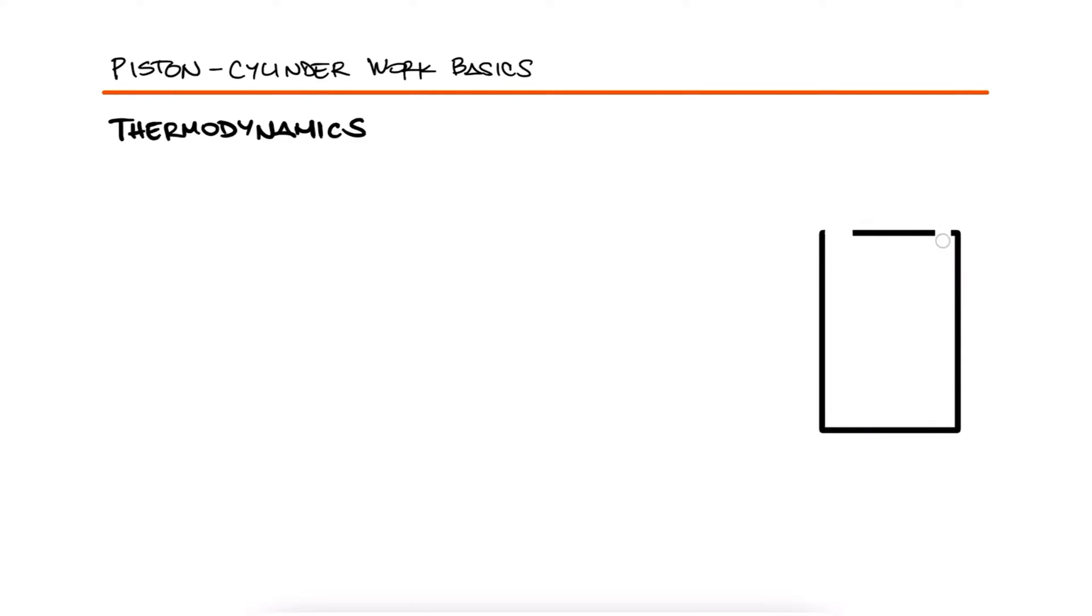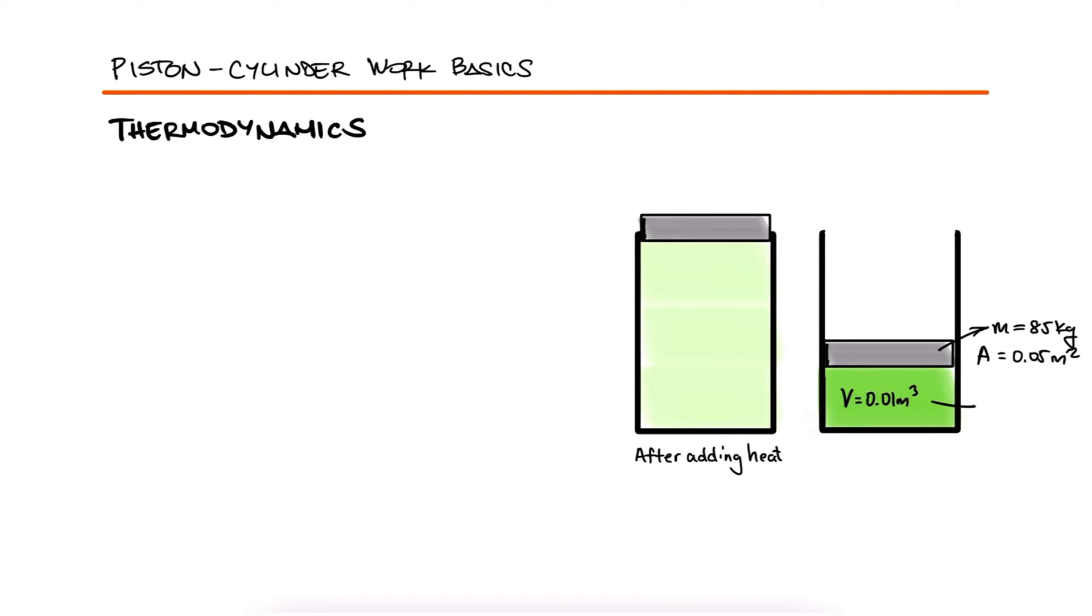An 85 kilogram piston of a vertical piston-cylinder device containing a gas has a cross-section area of 0.05 meters squared and is in static equilibrium. If the volume triples when some heat is transferred to the gas, what is the absolute pressure before and after the heat is added, and what is the mechanical work that results from adding the heat?